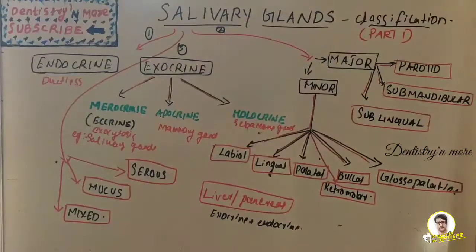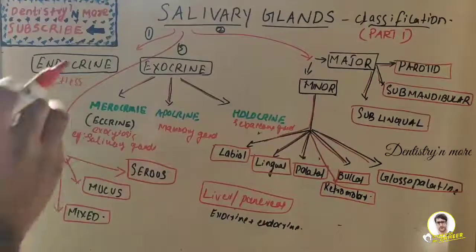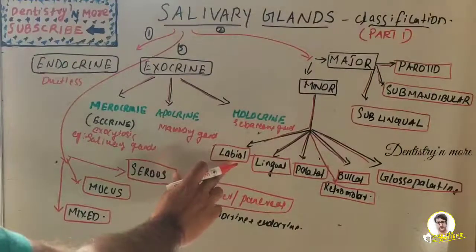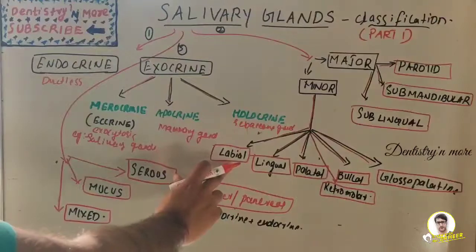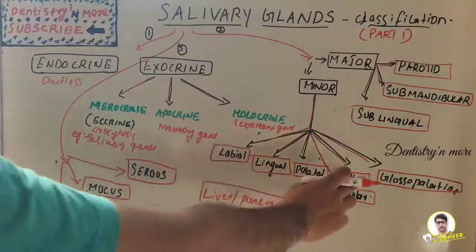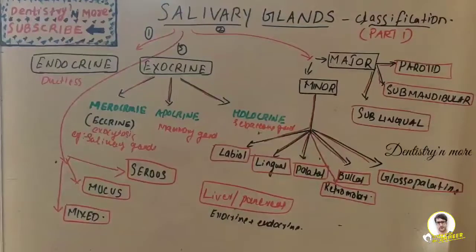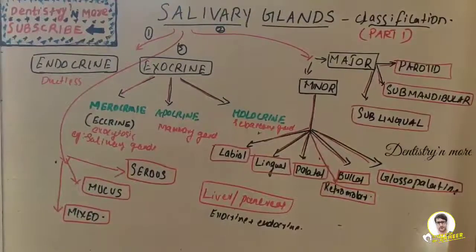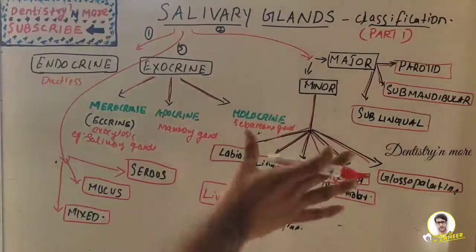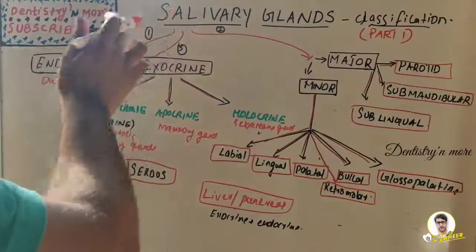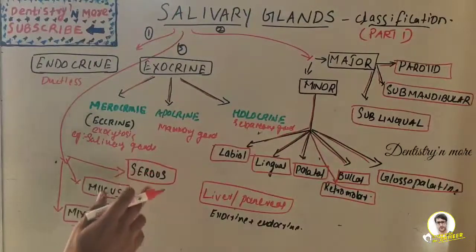The minor salivary glands are smaller in size. They include the labial, lingual, palatal, buccal, glossopalatine, and retromolar minor salivary glands. They are present in the submucosal layer and open onto the mucosal surface through short ductal openings.